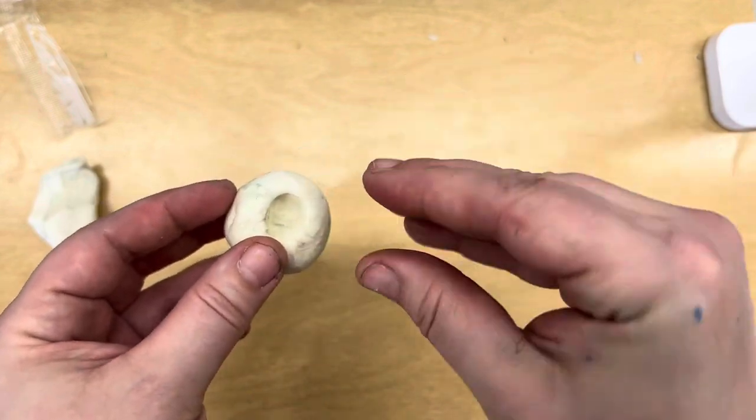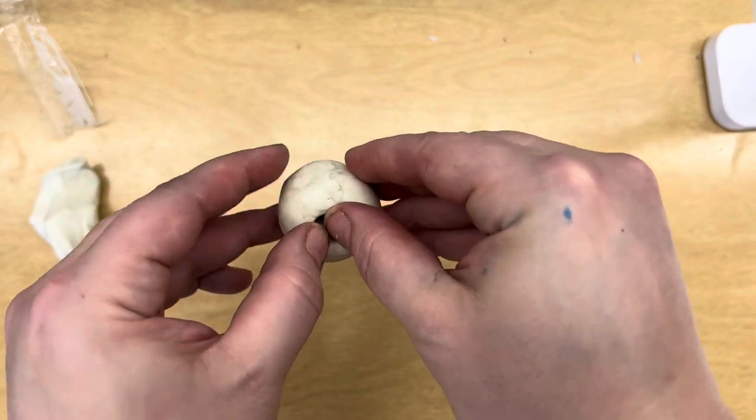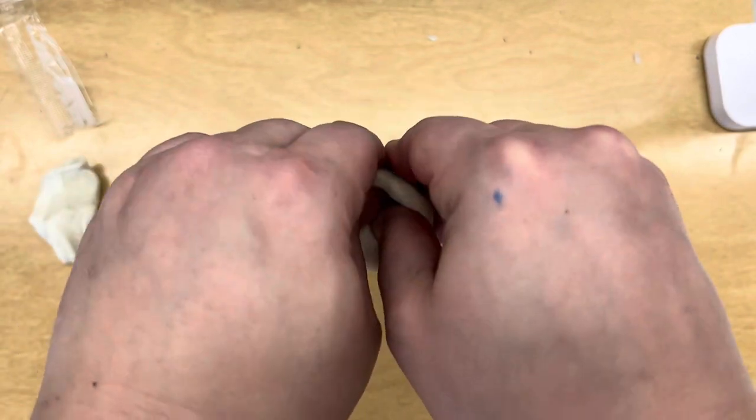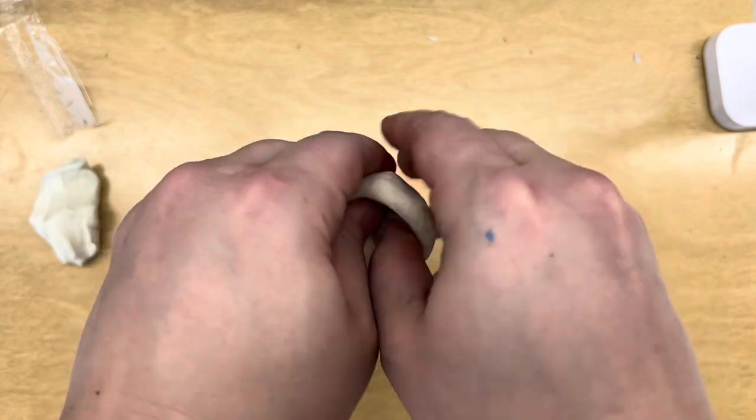And step three, make some duck kind of hands and start to pinch and turn. Pinch and turn. That's why it's called a pinch pot.